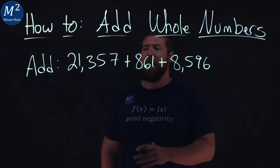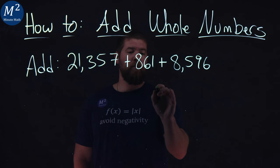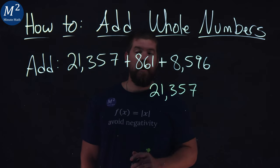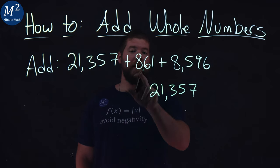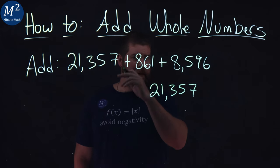We're going to use the traditional method here, and I'm going to write each one of these in a vertical stack. Let's start with the 21,357. Underneath that, I'm going to put my 861, and I'm going to make sure our corresponding values line up, our places here.